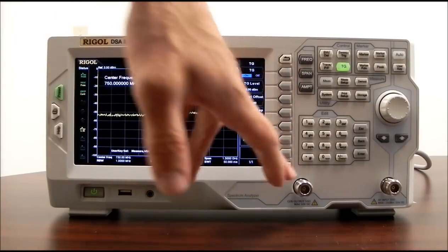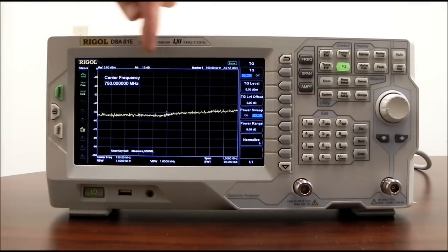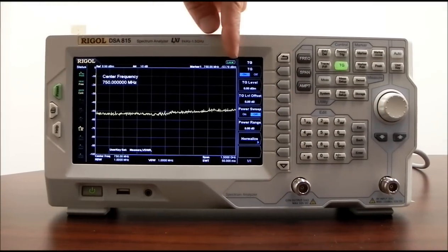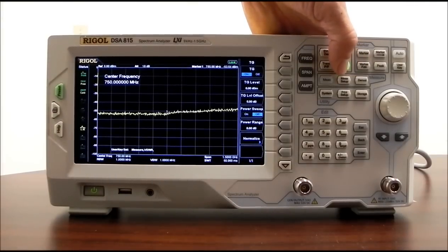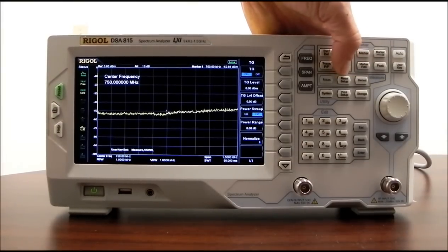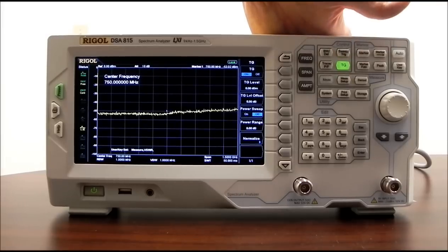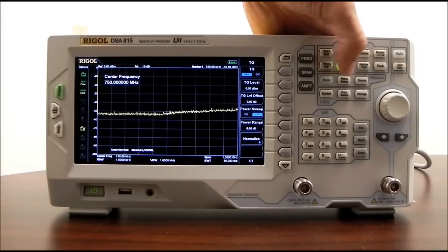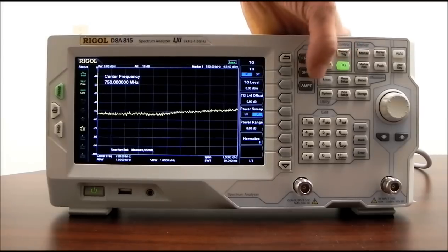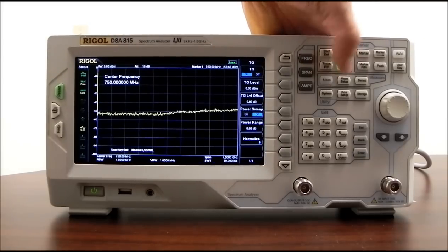So we're going to have a 0 dB output tracking along that range of frequencies. It can be helpful if you're going to be testing amplifiers, filters, as well as making VSWR measurements on antenna. You're going to need a tracking generator for that, a very popular option. And next we can move on to the measurement capabilities.